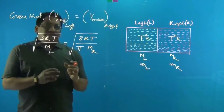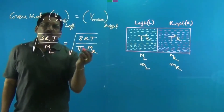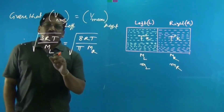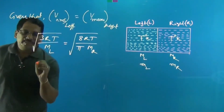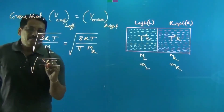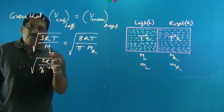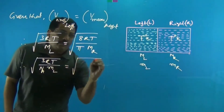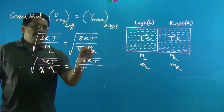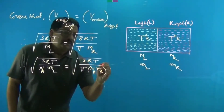Now it is asked for the ratio of the masses of the molecules, so let's modify the molecular weight. Since the product of Avogadro's number and the mass of a molecule gives the molecular weight, we can write: √(3RT / N_A·m_L) = √(8RT / π·N_A·m_R), where N_A is Avogadro's number and m_L, m_R are the individual molecular masses.